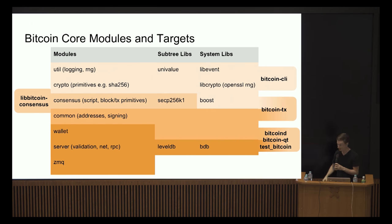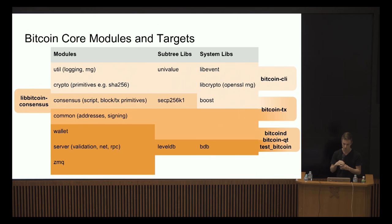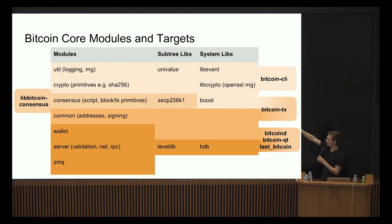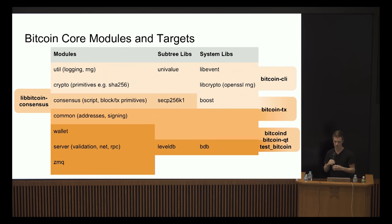Right now libbitcoin-consensus is really minimal — it cannot deal with anything stateful, so we can only do stateless checks such as simple transaction verification. We also have another target, bitcoin-tx, which is a utility to create or modify transactions.